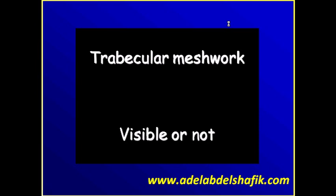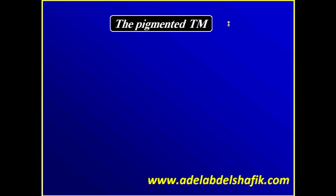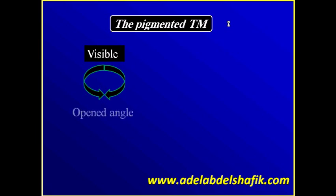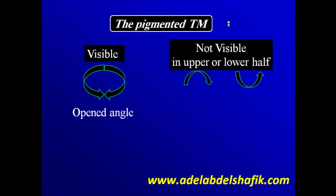You need to see the trabecular meshwork — is it visible or not? If it's not visible, then you are dealing with an occludable or occluded angle. You need to examine the upper half and the lower half of the angle. If the pigmented trabecular meshwork is visible, it's an open angle, and you have to be sure it is visible in 360 degrees. If it's not visible in the upper or lower half, this is an occludable angle.